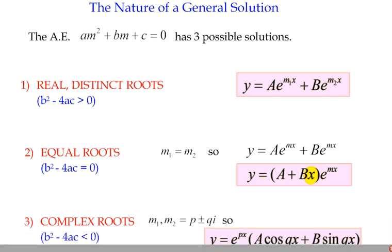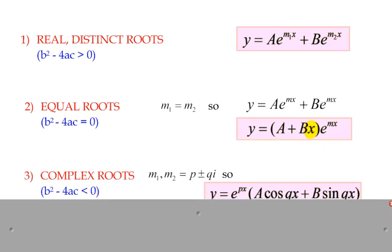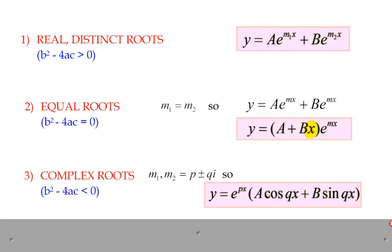Thirdly, if you get a complex root where the real part is p and the imaginary part is q, the real part p becomes the m term in your exponential function, and the imaginary part q becomes the argument of the trigonometric functions. Note that A·cos(qx) plus B·sin(qx) is not in polar form — there's no imaginary part in the function, these are real values. The reasons behind this can be explored further on other resources.